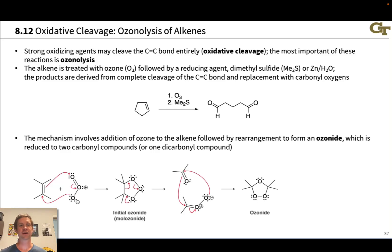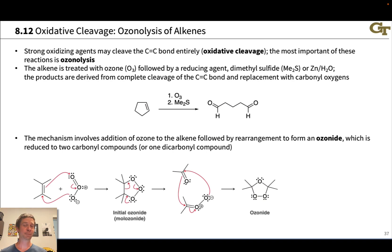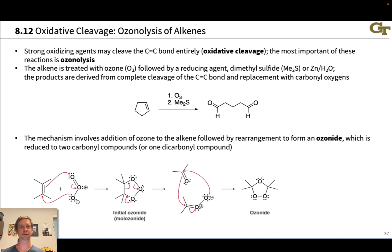Strong oxidizing agents actually have the capability of cleaving the carbon-carbon double bond entirely and installing carbonyl groups where the alkene's carbons were. This is a really cool reaction, especially after you learn about reactivity of the carbonyl group. This is going to open a lot of doors to some very interesting structural rearrangements and transformations starting from alkenes.